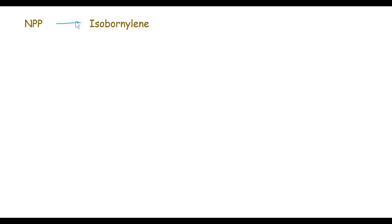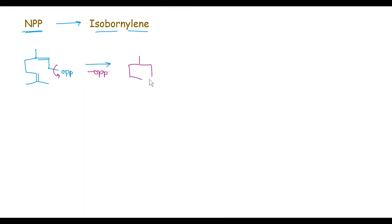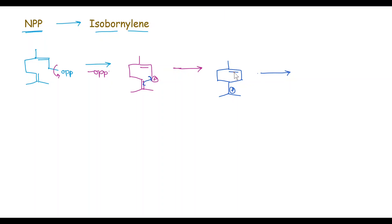Next, we will see the Biogenesis of Isobornyl from NPP. So, in the first step, loss of OPP from NPP, and we get here an allylic cation. In the next step, this Pi bond attacks on this carbocation, and we get a six-membered ring with this positive charge and double bond. In the next step, this Pi bond attacks on this carbon atom, and we get here a positive charge. This moiety is called as Pinene-cation.